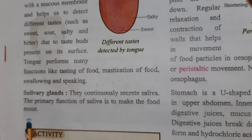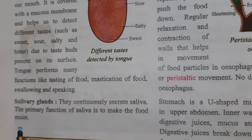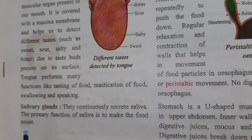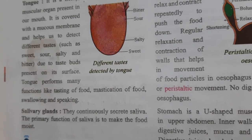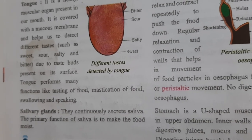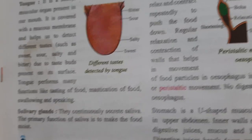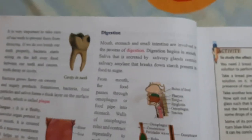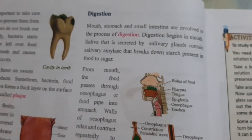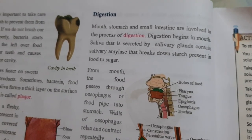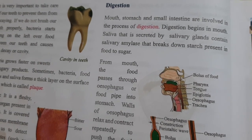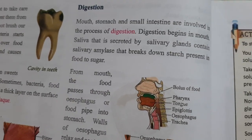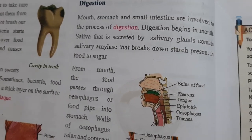The tongue performs many functions: tasting food, mastication of food, swallowing, and speaking. Another organ is the salivary glands, which continuously secrete saliva. The primary function of saliva is to make the food moist and soft.